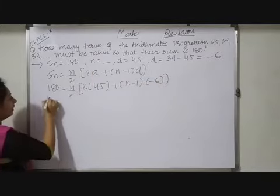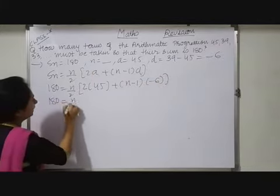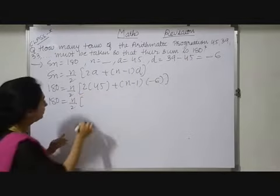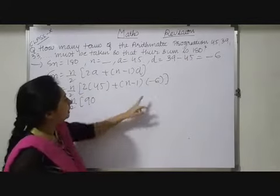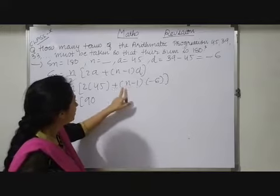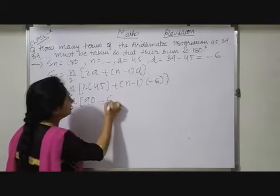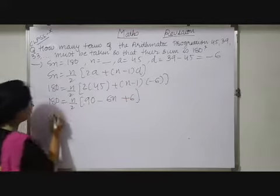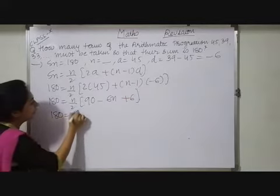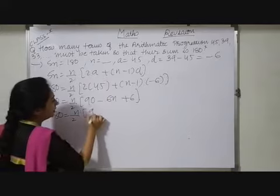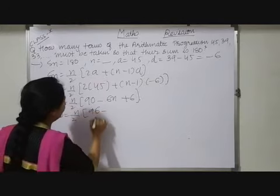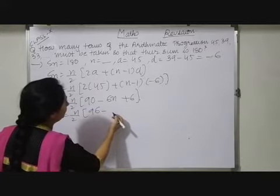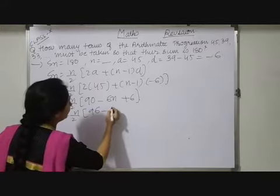So students, now we have 180 equals to N by 2. 45 two times will be 90 here. Now multiply minus 6 inside, so plus minus, minus 6N minus minus will be plus 6. So when we simplify here we have N by 2, 96 minus 6N.